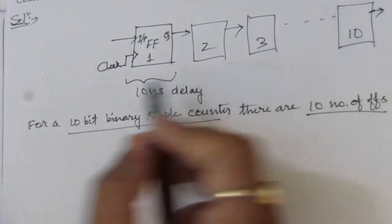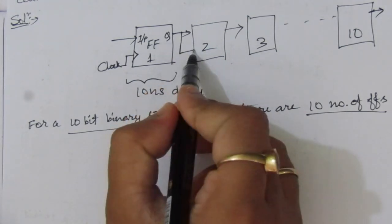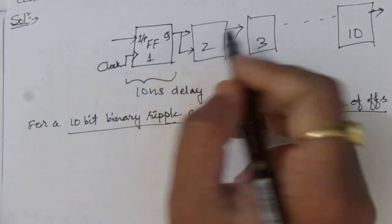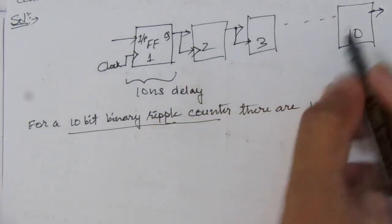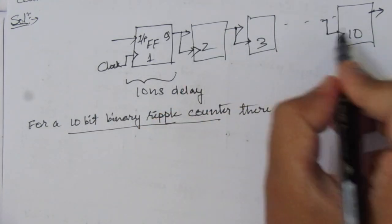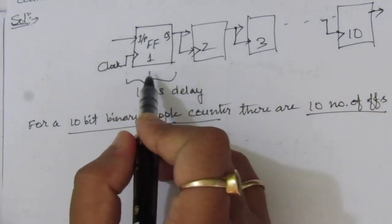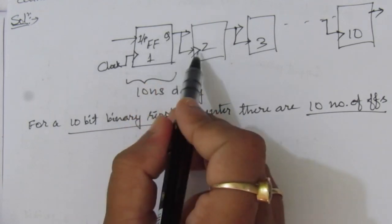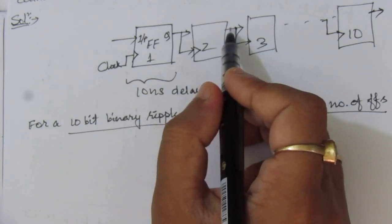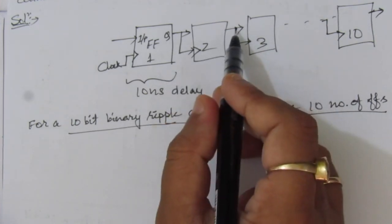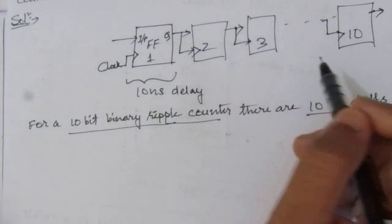After getting the clock, after 10 nanoseconds we will have the output of the first flip-flop. This output is connected to the clock input of the next flip-flop — because it is a ripple counter, the previous output drives the next clock input. After another 10 nanoseconds that flip-flop gives its output, so after 20 nanoseconds we have the second output, after 30 nanoseconds the third, and so on.